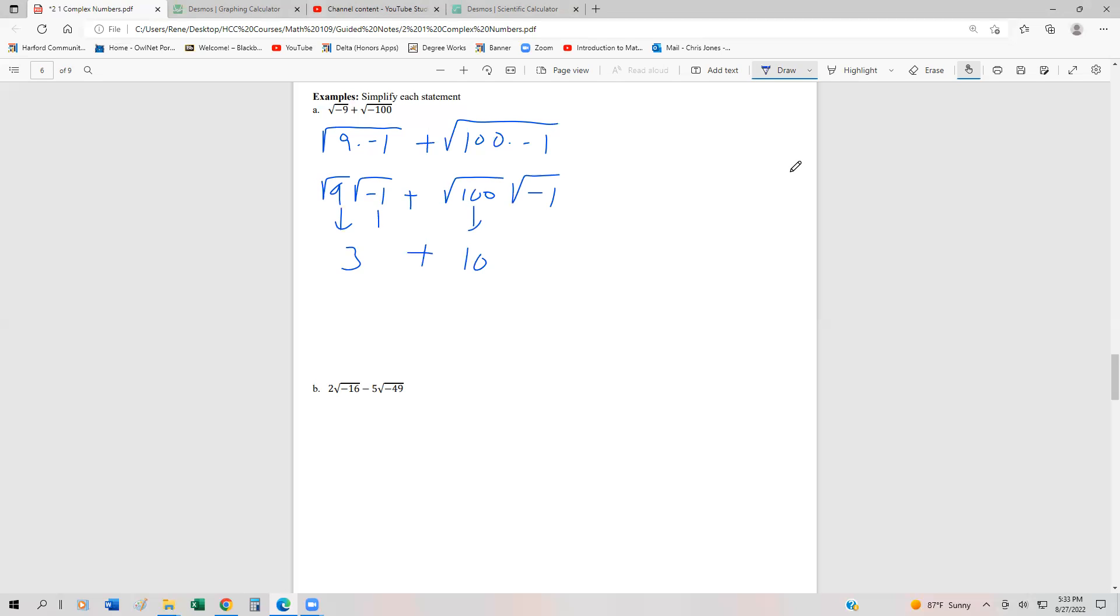And we know that both of the square roots of negative 1 is going to be i. So we end up with 3i plus 10i, and that's going to be 13i. So really easy to work through that.